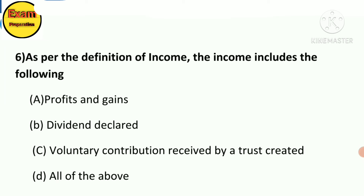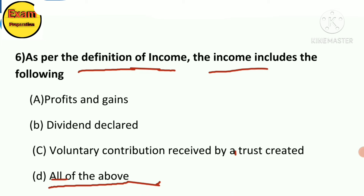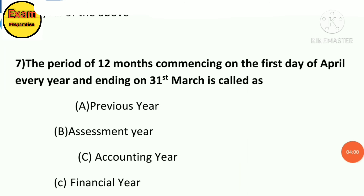MCQ 6: As per the definition of income, income includes the following — A. Profit and gain, B. Dividend declared, C. Voluntary contribution received at a trust created, D. All of the above. The answer is option D: All of the above. The definition of income includes profit and gain, dividend declared, and voluntary contribution.